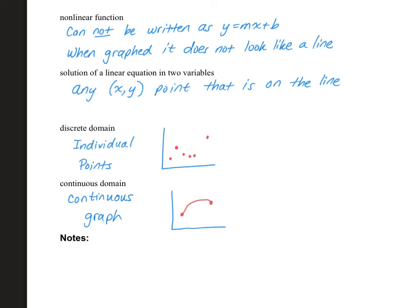When you have a discrete domain, your answer will list individual points like one, two, three. If you have a continuous domain, you're going to give the domain using less than or greater than signs — for example, one less than or equal to x less than or equal to five. So for a discrete domain, they're individual numbers; for a continuous domain, you'll use inequality signs.